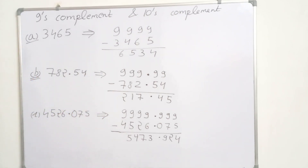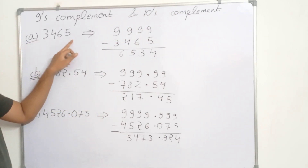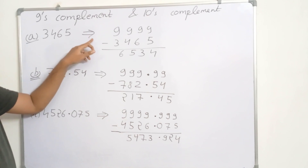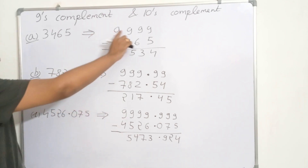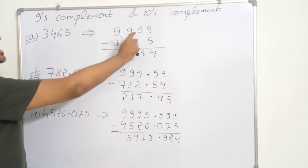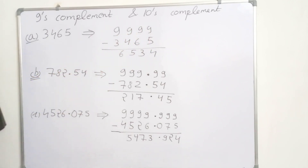We have a decimal number 3465. To find its 9's complement, what we have to do is we have to subtract 9 from all the digits.